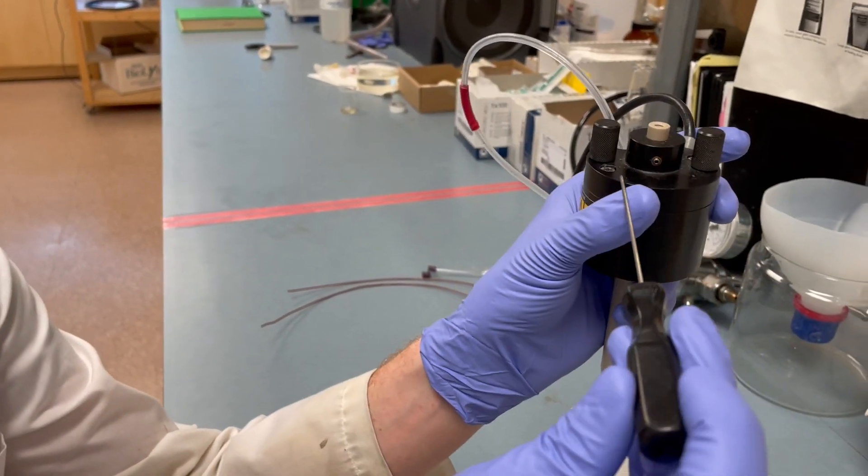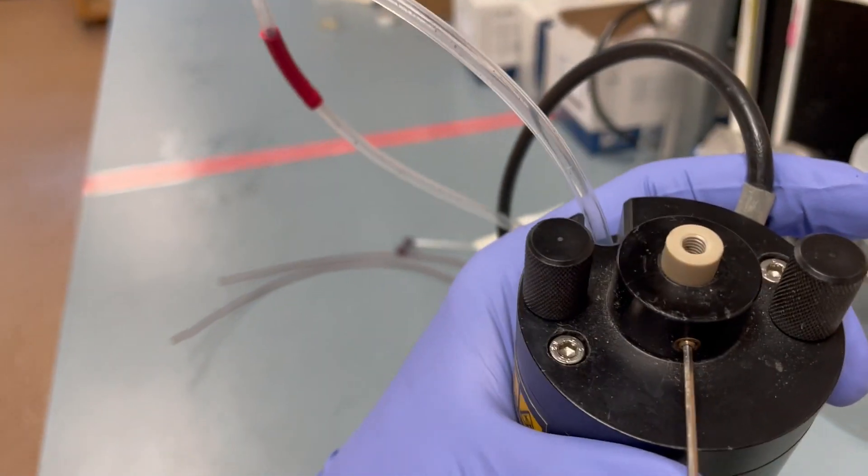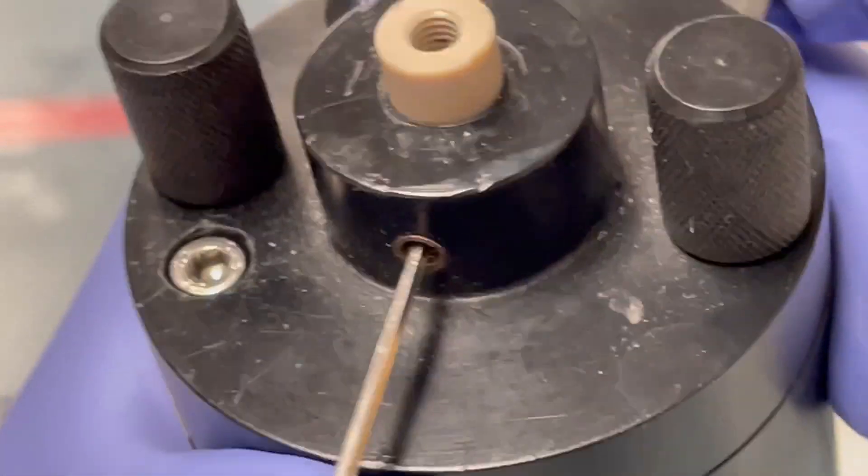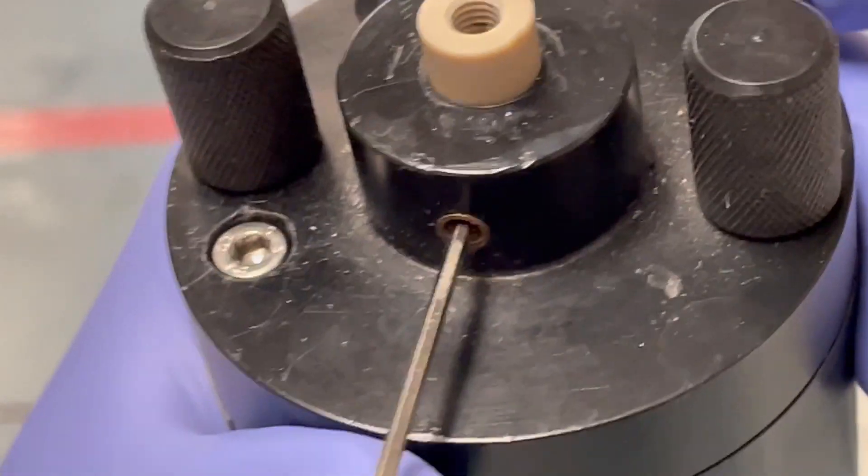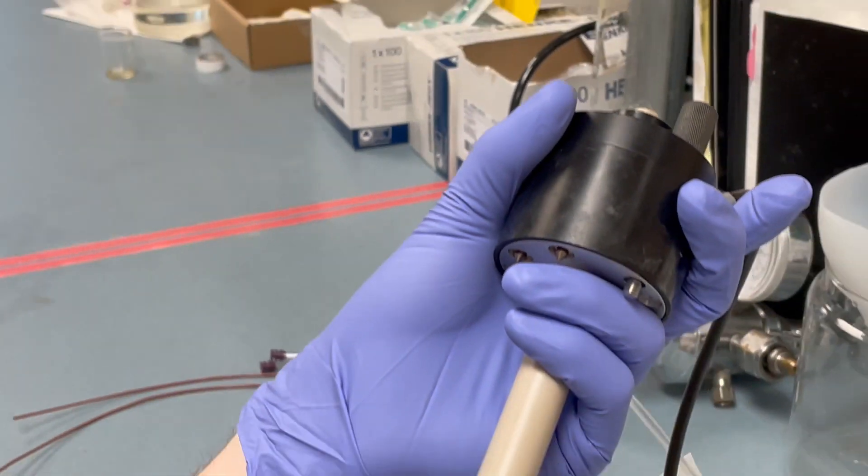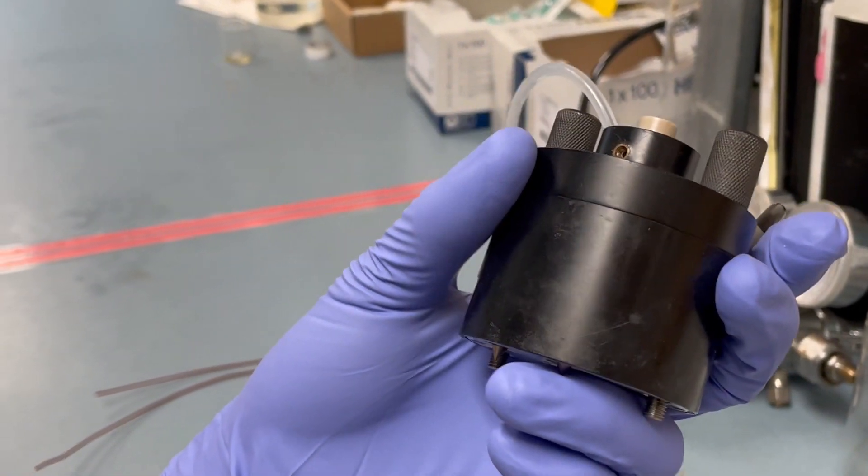Then the last thing that we're going to do is re-adjust the set screw. Now we're ready to put this back into the source or the spray chamber of the instrument.